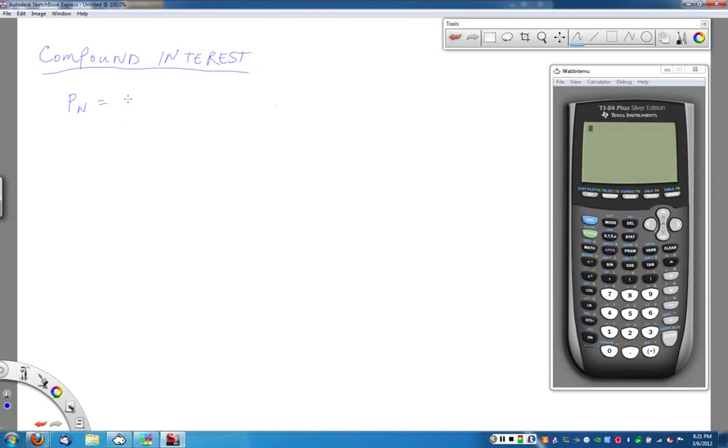But there's a great formula that works and this is the one we want to use. It's P with a capital N there equals P0 or P0 times by 1 plus R divided by K to the capital NK. So our pieces of information that we need here, P0 of course just like before is my starting amount or my principal. R is my annual interest rate still.